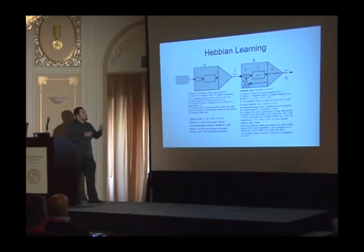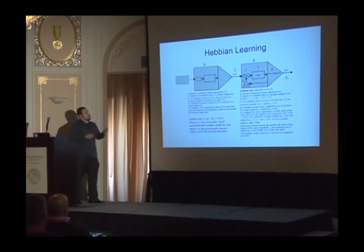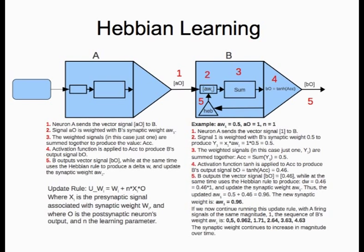Unsupervised learning gives neurons the ability to change as they process data. The simplest one is the Hebbian learning rule — quoting Hebb: neurons that fire together wire together. This is basically an internal algorithm within a neuron that gives it the ability to modify its synaptic weights based on the signals it processed before.